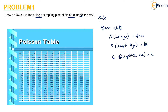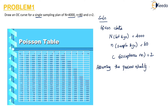Before we solve the problem we have to make one assumption. We have to assume that the process quality, that is 100 times fraction defective, is varying from 0 to 9% in the lot.